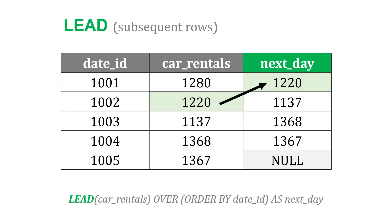Lead is going to be just slightly different — in this case I'd be looking at the next day. So in my first day I see the current day which is 1280, and the next day which is 1220, so I can find the difference there. Notice how in the last row there's no next day, so you see null at the end.